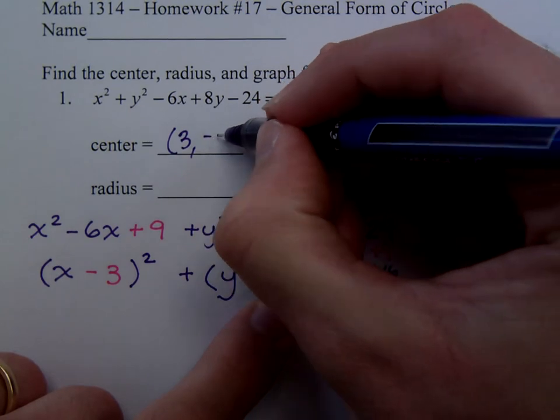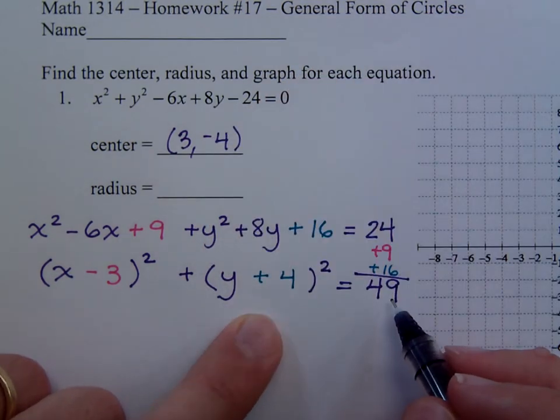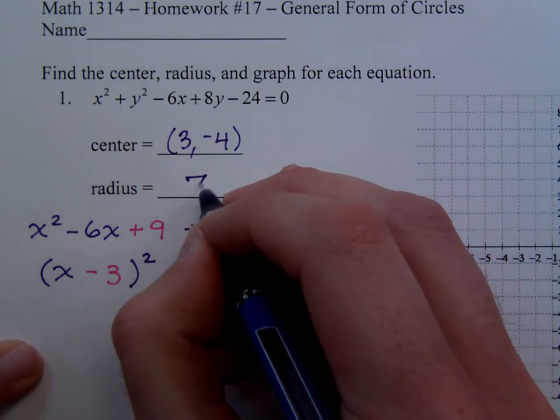The opposite of this guy, which is negative 4. The radius squared is 49, so the radius itself is just 7.